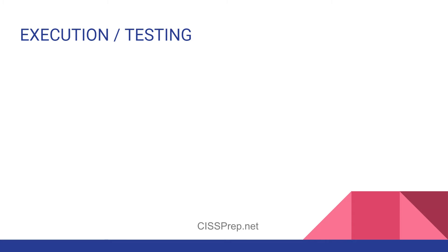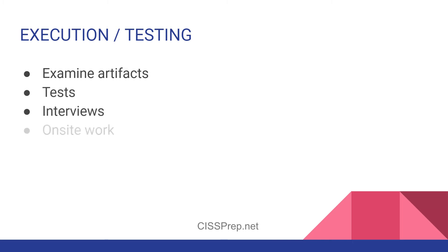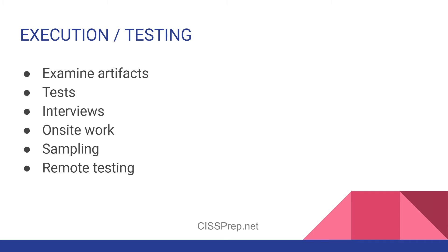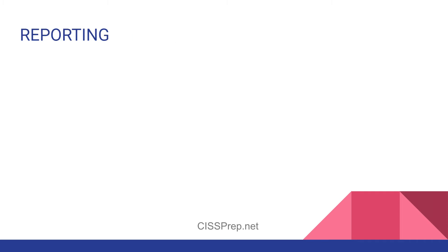Execution and testing can be called either one, so lump the two together because they mean the same thing. This is where the auditor or assessor examines artifacts, performs tests, conducts interviews, does on-site work like collecting samples, and any remote testing. For internal audits, this is the testing phase which includes conducting vulnerability assessments. A penetration test of a specific application or system might also be part of the testing or execution phase of an audit.